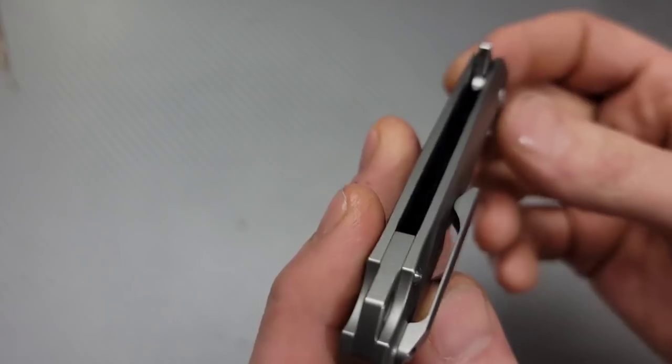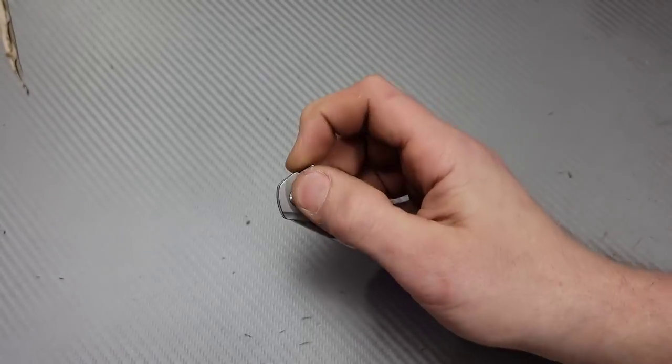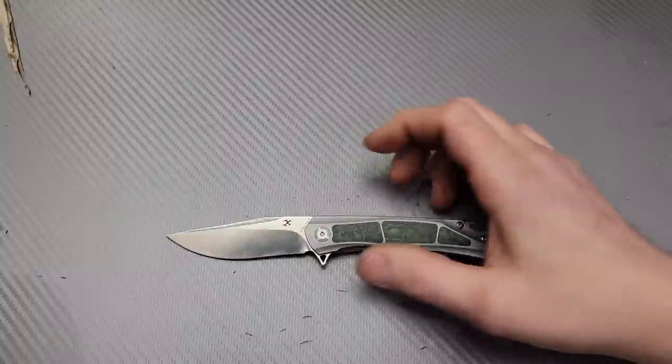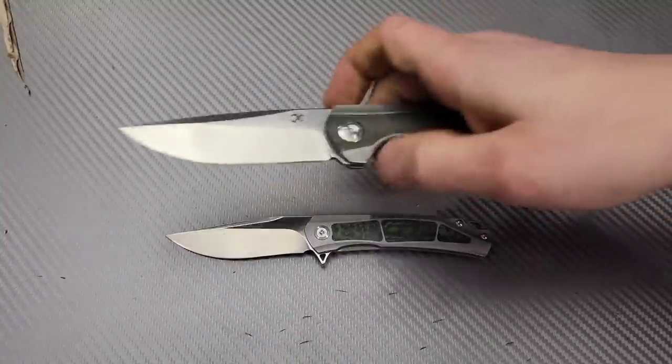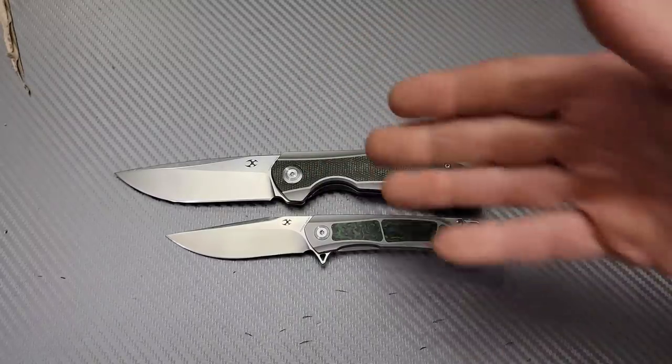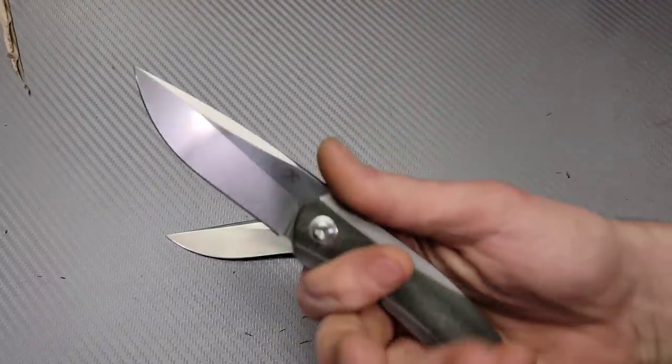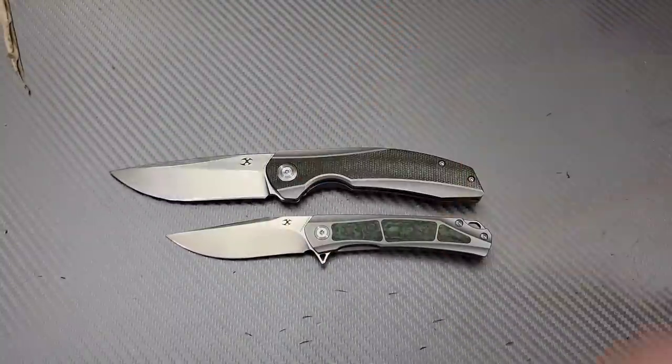Titanium milled pocket clip and back spacer and you have a lanyard hole right there because it is a smaller knife. This is my Concept Excipiter and this is a full size, right around eight inch knife, three and a half inch blade so you can see how small the Gremlin actually is.